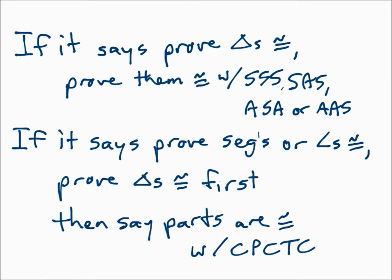Another thing to keep in mind: if the proof says to prove triangles congruent, then prove them congruent, and your final answer will be whether you're using SSS, SAS, ASA, or AAS. However, if it says to prove segments congruent or to prove angles congruent, prove the triangles congruent first, and then say that those parts are congruent because of CPCTC — corresponding parts of congruent triangles are congruent. Always pay attention to your goal.